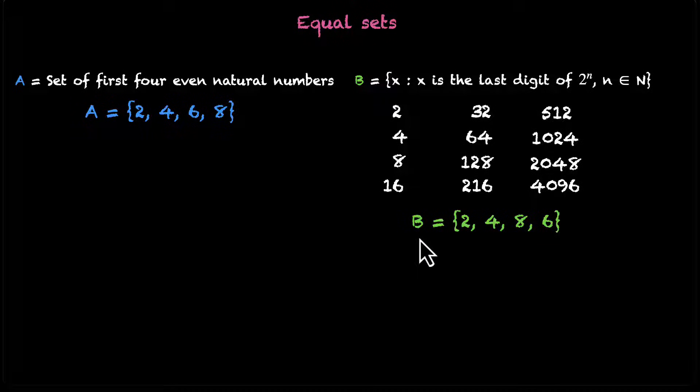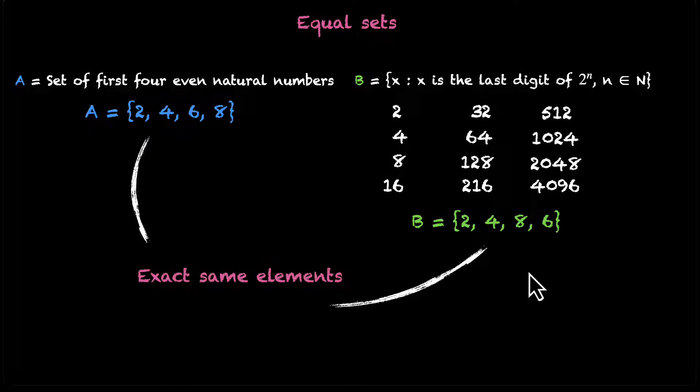Now let's look at both of these sets. A has 4 elements, 2, 4, 6, and 8. B also has 4 elements, 2, 4, 8, and 6. In fact, they have the exact same elements. And whenever that happens, we can say that these two sets are equal. Again, the order does not matter. As long as the elements are exactly the same, the sets are equal to each other.